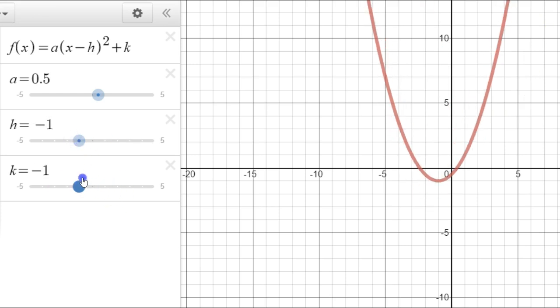k moves it up and down. It does not change the shape, just moves the parabola up and down.